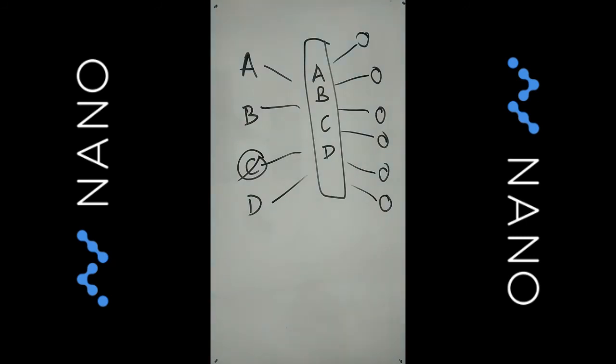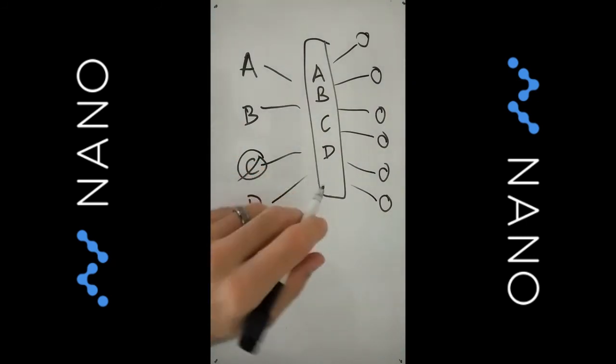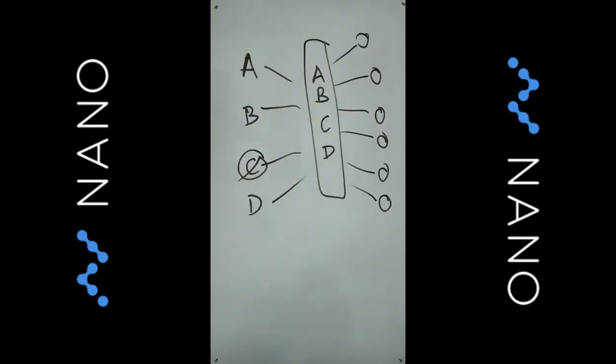So the way that we would do that is basically to pre-sign not just our outputs but also to pre-sign the refund scenario. So in the case where C drops out we would also have pre-signed a series of transactions that refunds A, B and D.